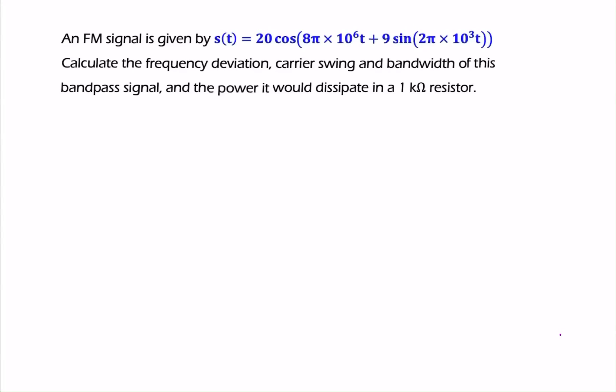Here, in this question, we're given an FM signal and we're asked for four things: the frequency deviation, the carrier swing, the bandwidth (that'll be an estimation), and the power. So let's write those four things down.